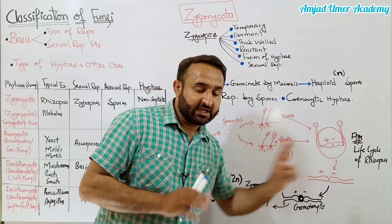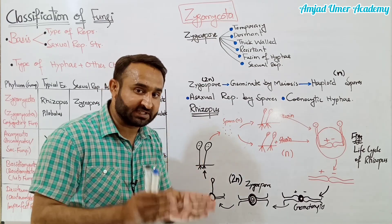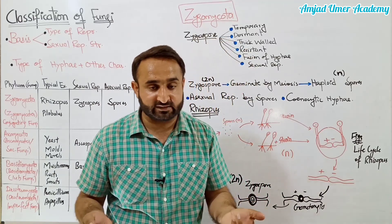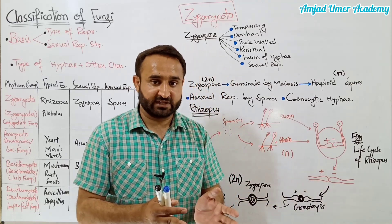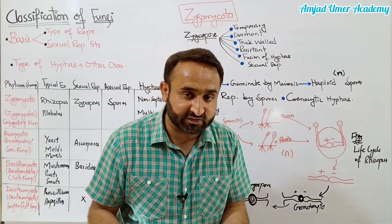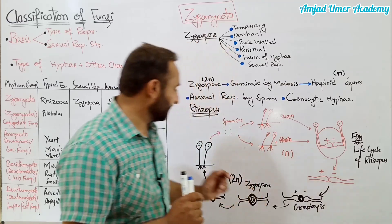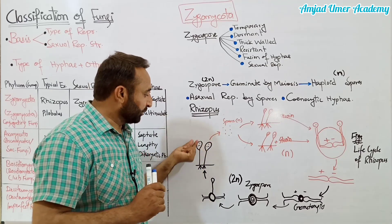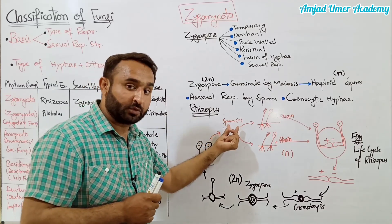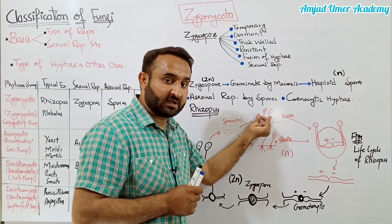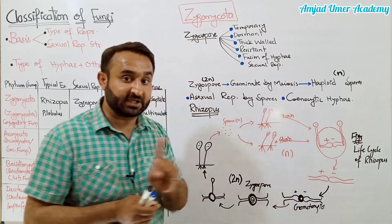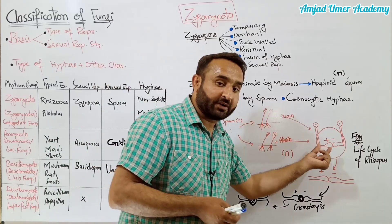Yaad rakhna: jo bhi red se likha hua hai yahan, ye Rhizopus ke life cycle ki haploid stage hai, aur jo bhi black se likha hai ye diploid stage hai. Mitosis ke natije mein parental aur daughter cells mein chromosome number same rehta hai. Yahan se hum shuru karte hain - ye ek plant hai, is plant mein sporangium hai jo sporangiophore ke upar lage hue hain. Sporangiophore ke upar sporangium lage hue hain. Dono plants genetic variants hain - ek ko positive strain keh diya, doosre ko negative strain.